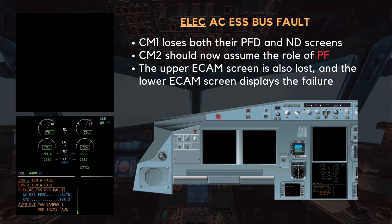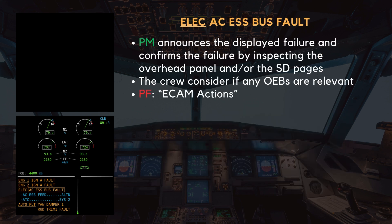The upper eCAM screen is also lost, and the lower eCAM screen displays the failure. As with any eCAM procedure, the pilot monitoring announces the displayed failure and confirms the failure by inspecting the overhead panel and/or the SD pages. Next, the crew consider if any OEBs are relevant, and if not, then the pilot flying calls for eCAM actions.